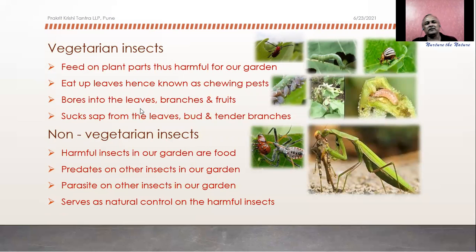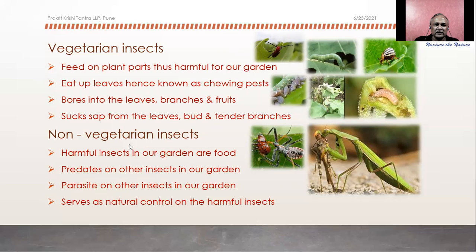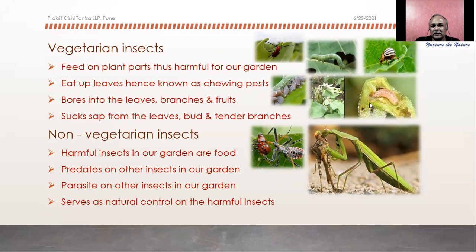There are two kinds of insects. Certain insects are vegetarian in nature — they are the enemies in our garden because they feed on plant parts. Another set of insects feed on other insects — non-vegetarian insects, predators or parasites, that actually control the population of pest insects. Certain bugs or caterpillars feed on leaves; certain others suck sap from leaves, branches, or twigs; and certain others bore inside the stem or fruit. These are the vegetarian insects that are pests for us.